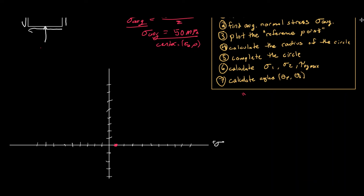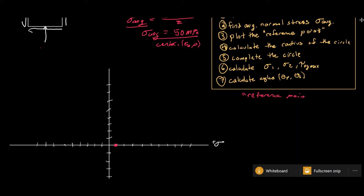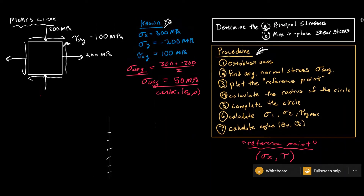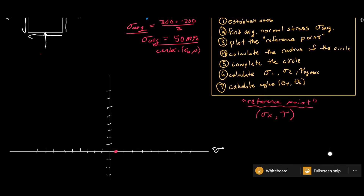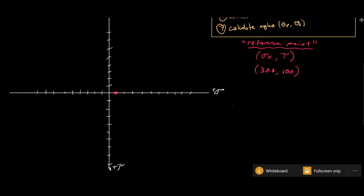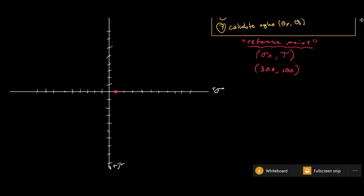Our next thing we want to do is plot what I call the reference point. We can use this reference point to find the radius of the circle. The reference point is always going to be the normal stress in the x-direction paired with the shear stress from our stress element. We have a normal stress of 300 and a shear stress of positive 100, so we're going to plot (300, 100) on our diagram. Positive 300 in x, and then 100 down — the reason it's 100 down is because positive shear stress goes down on Mohr's circle.